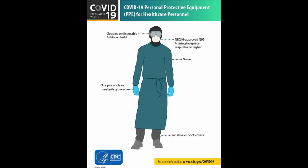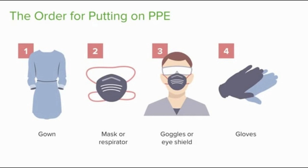Now let's look at the types of PPE we use and the order of wearing them — known as donning. The sequential order is: first we put on the gown, then the mask or respirator, next the goggles or face shield, and gloves come last.